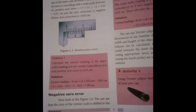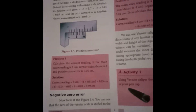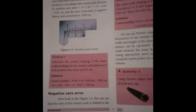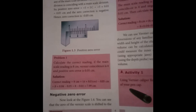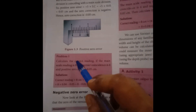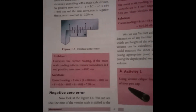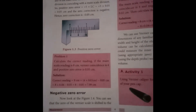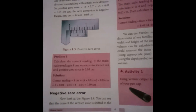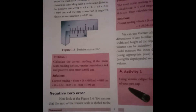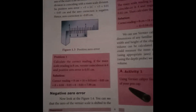Hello students. Now we will work on the problems in the measurement chapter. See problem number 1. Calculate the correct reading if the main scale reading is 8 cm, vernier coincidence is 4, and positive zero error is 0.05 cm.